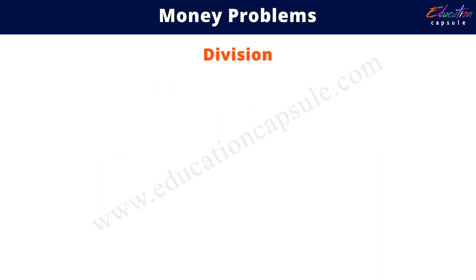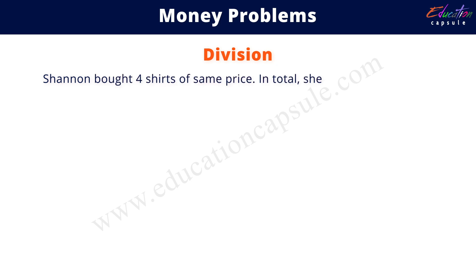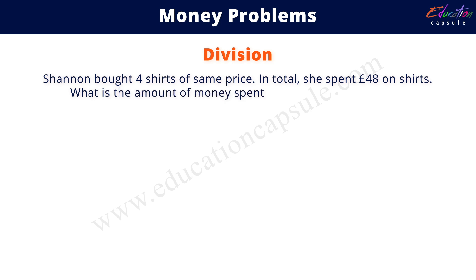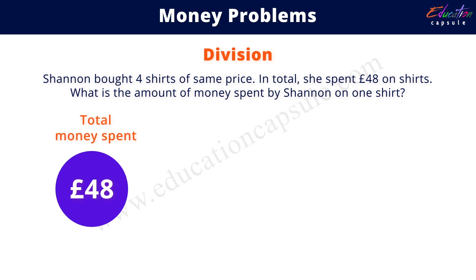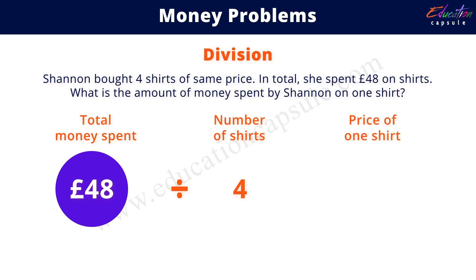Next is division. Shannon bought four shirts of the same price and in total she spent 48 pounds. What is the amount spent on one shirt? The total amount spent is 48 pounds and the number of shirts is 4. To find the cost of one shirt, we divide 48 by 4, so the price of one shirt is 48 divided by 4, which equals 12 pounds.